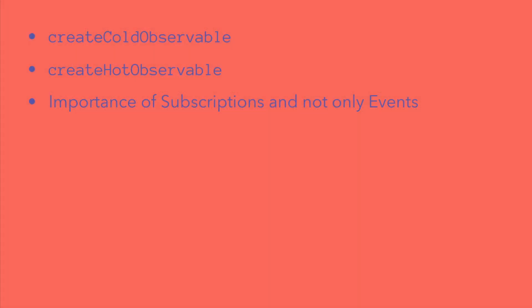Now we're going to go over the tests, focusing on the two methods: createColdObservable and createHotObservable, and explain the differences. Before going there, we need to make sure you understand what cold versus hot observables are. This is one of my biggest complaints about the RxSwift community — even in books and literature, they just mention it, but this is the first thing we should explain because it changes so much the behavior of an observable.